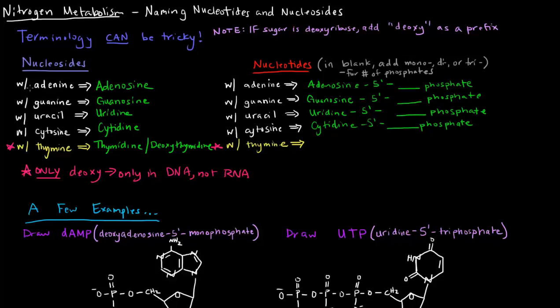For all of these other nucleosides, these are ribonucleosides: adenosine, guanosine, uridine, and cytidine. If you want to make these deoxy, if the sugar is deoxyribose instead of ribose, all you have to do is put a deoxy in front of them as a prefix. So this would be deoxyadenosine, deoxyguanosine, deoxyuridine, or deoxycytidine.